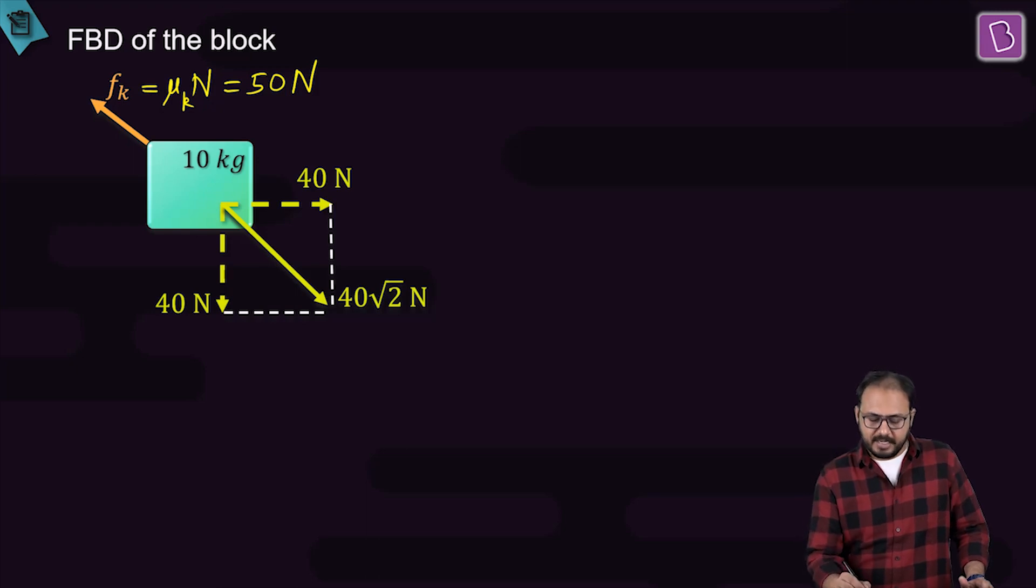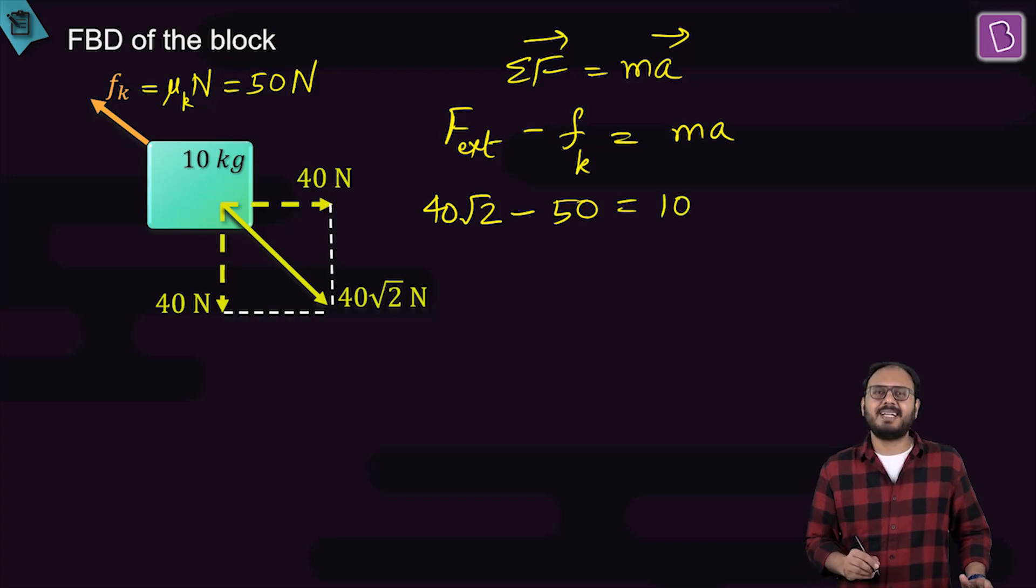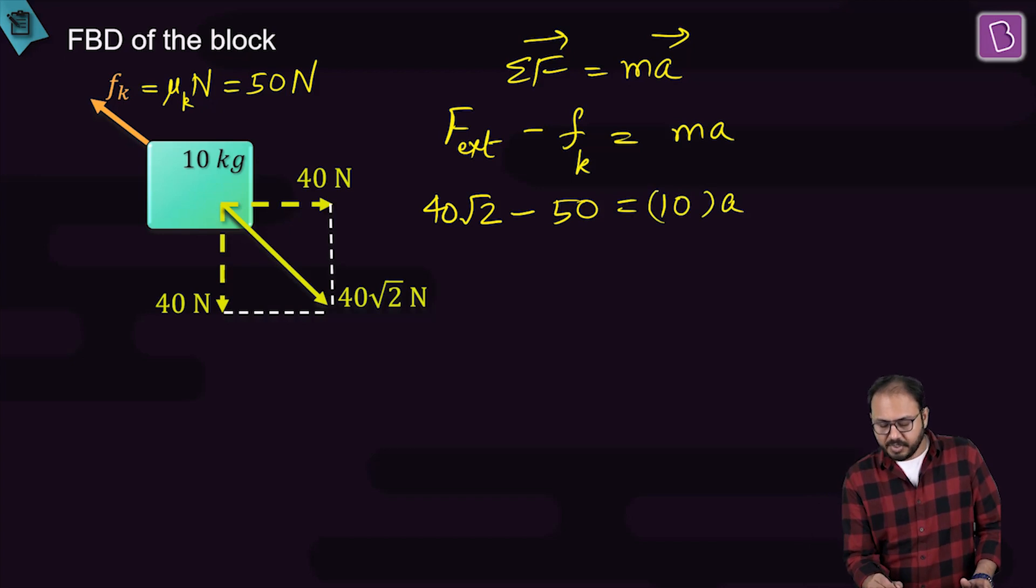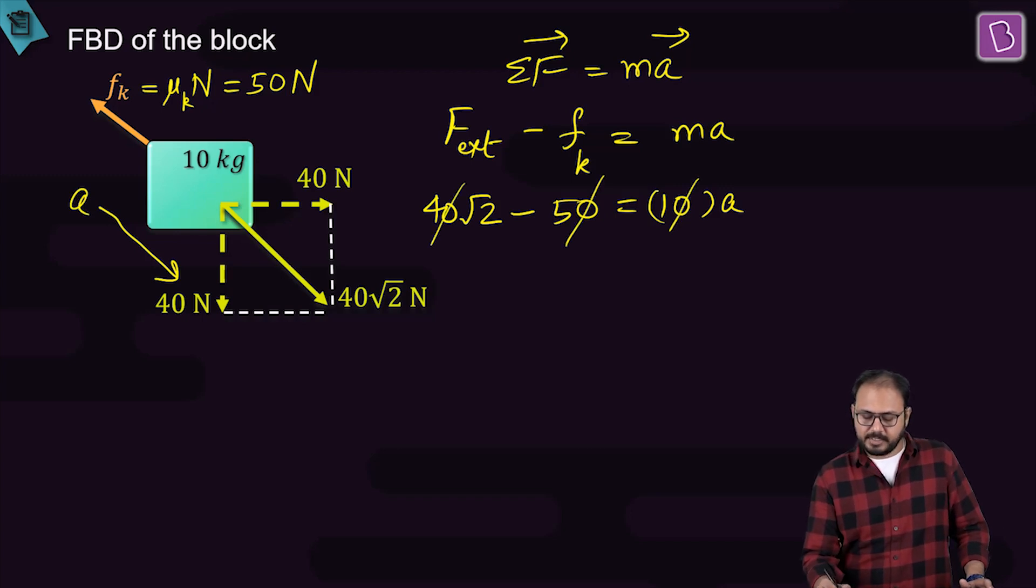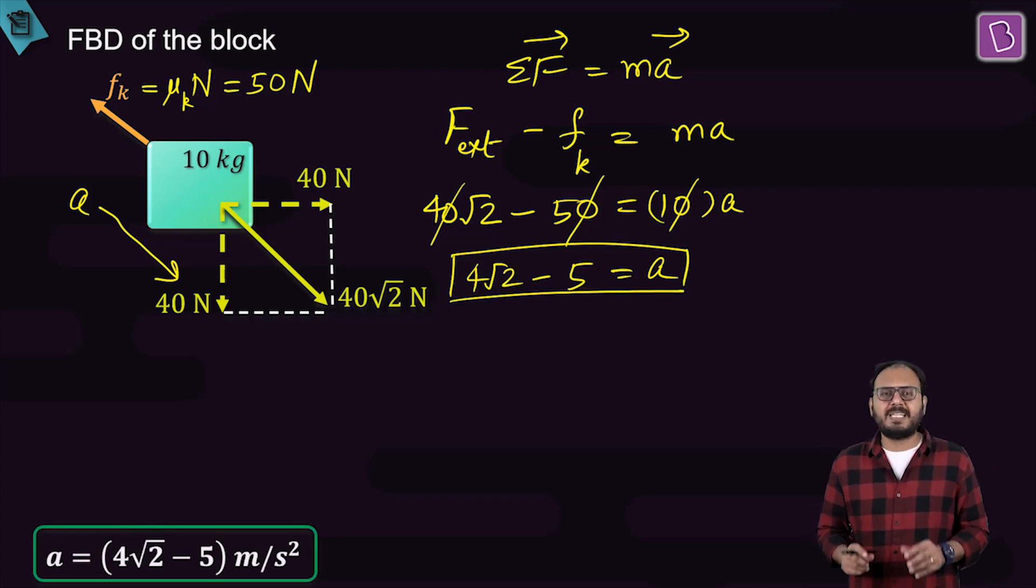What is the net force? Sigma F equals mass times acceleration. Sigma F is 40 root 2 minus 50. F external minus fk equals ma. F external is 40 root 2, fk is 50, mass is 10 times acceleration. The direction of acceleration is clearly along the F external. Zeros cancel, and as per my calculation I'm getting 4 root 2 minus 5 as the acceleration.